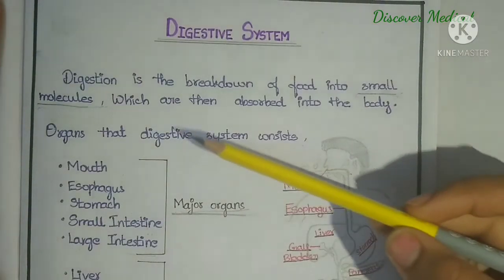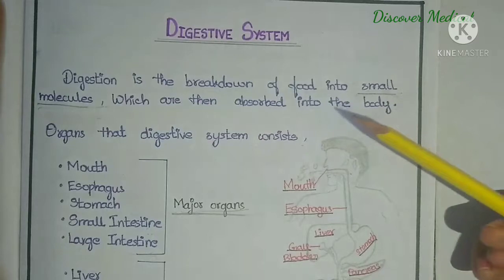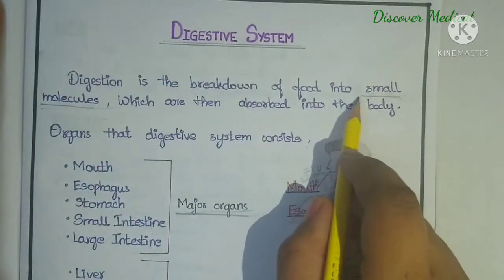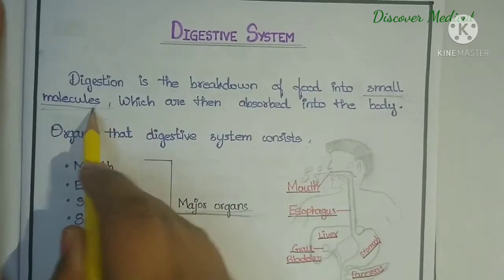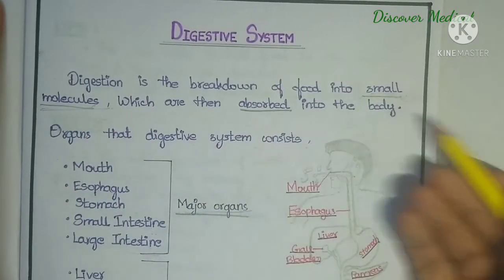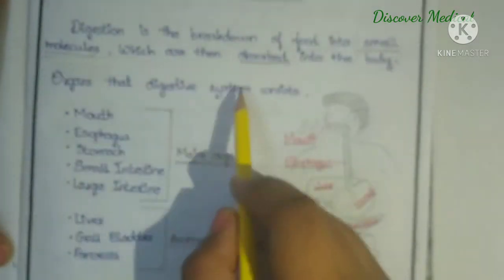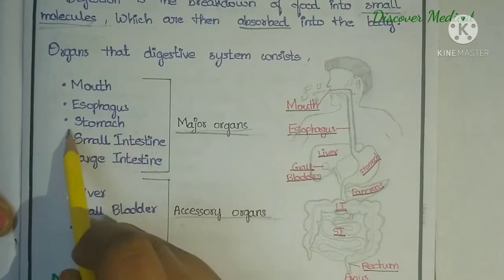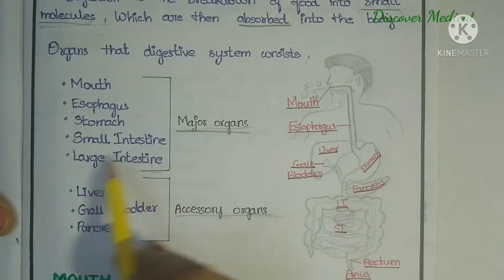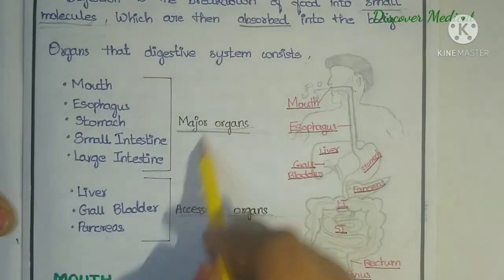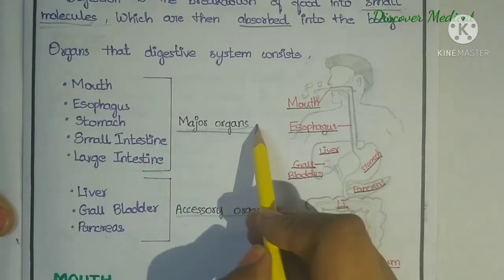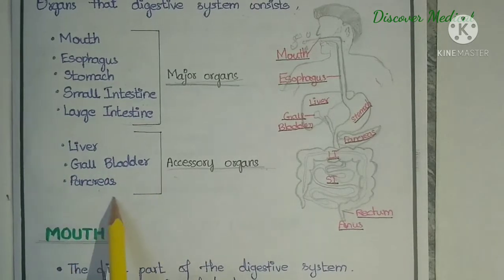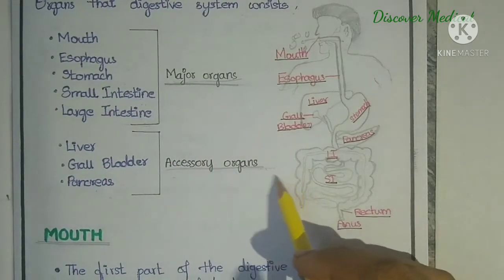Today's topic is the digestive system. Digestion is the breakdown of food into small molecules which are then absorbed into the body. The digestive system consists of major organs: mouth, esophagus, stomach, small intestine, and large intestine. The accessory organs are the liver, gallbladder, and pancreas.